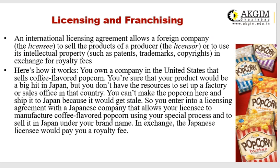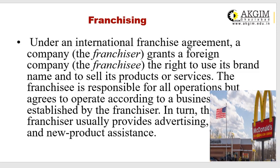An international licensing agreement allows a foreign company — the licensee — to sell the product of a producer — the licensor — or to use its intellectual property such as patents, trademarks, and copyrights in exchange for royalty fees. For example, if you own a company in the US that sells coffee-flavored popcorn and want to sell in Japan but lack resources to set up a factory there, you enter a licensing agreement with a Japanese company to manufacture and sell the popcorn under your brand name in exchange for a royalty. This mode requires very little investment.